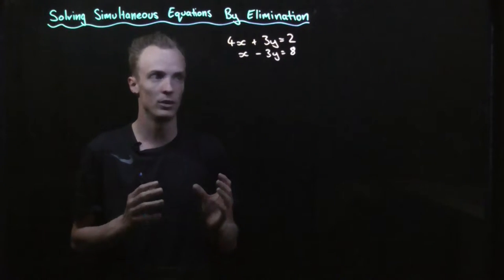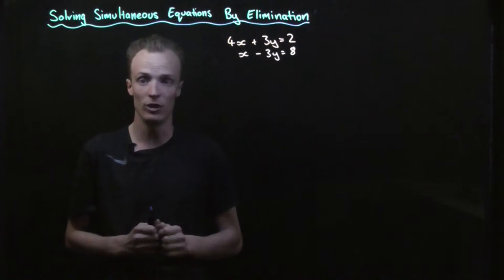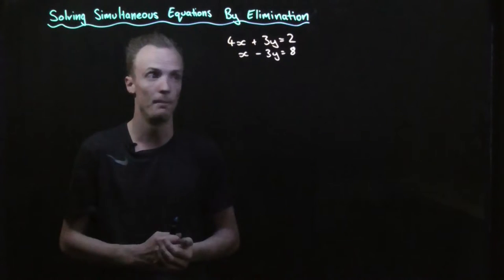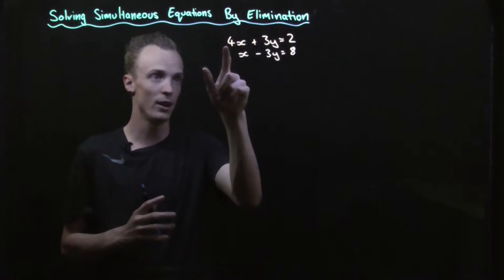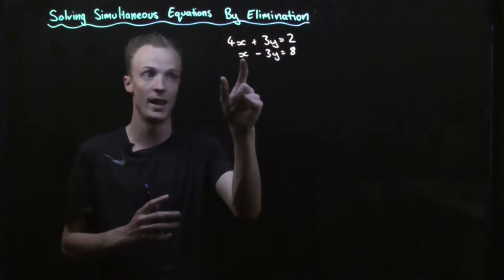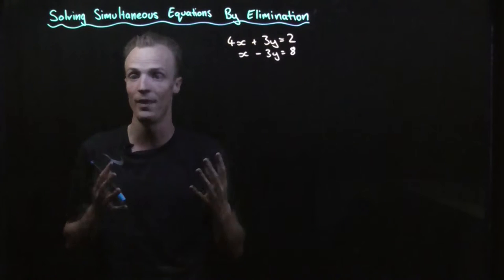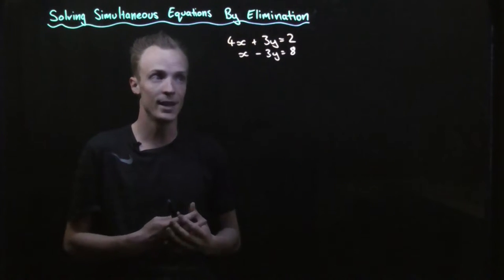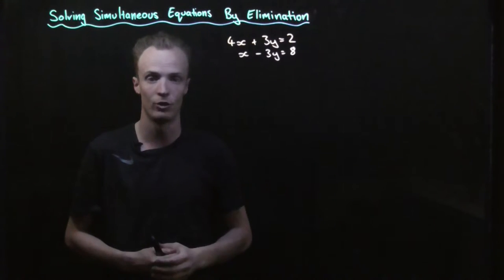So how do you decide what to do? The first thing we have to do is look at the coefficient of the pronumerals. We're trying to find a coefficient that matches — so either the coefficient of x, which in this case is 4 and 1 — they don't match — or the coefficient of the y's. In this case we've got positive 3 and negative 3, so we've got a match.